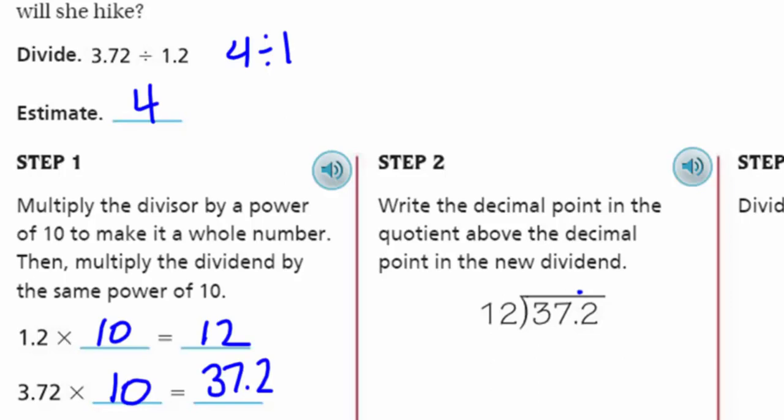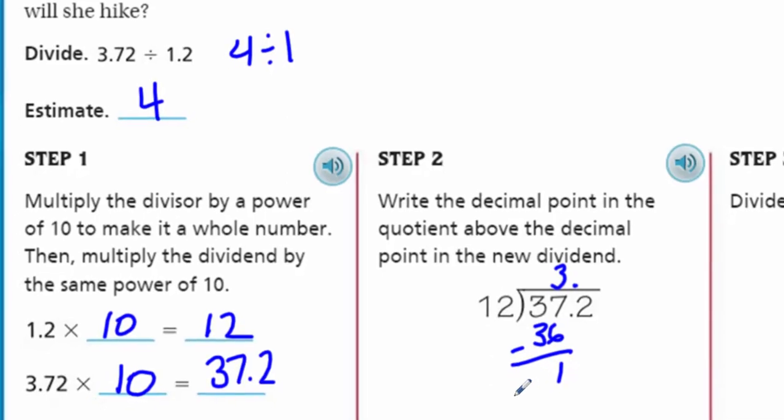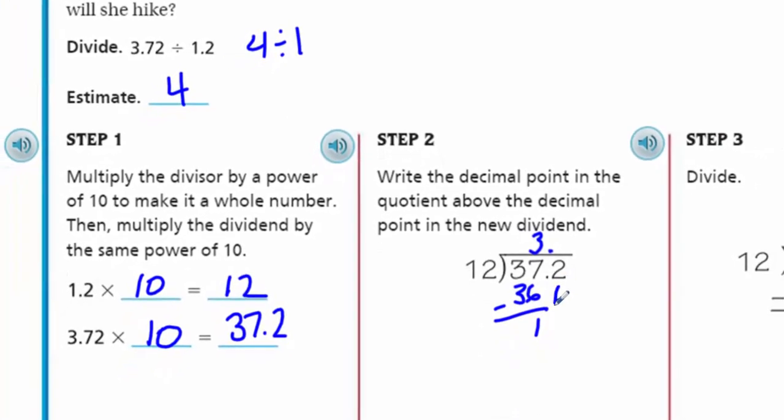Step two says write the decimal point in the quotient above the decimal point in the new dividend. It told us to do it first. And then 12 will go into 37. Oh, I love that one because 12 times 3 is 36. I subtracted here. I always seem to put my subtraction sign after I subtract. We're going to bring down that other digit there because we haven't done anything with the 2 yet. So 12 goes into 12. That's really nice. 12 minus 12, zero, no remainder. We end up with 3 and 1 tenth.